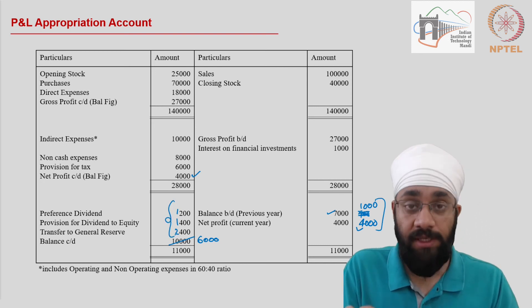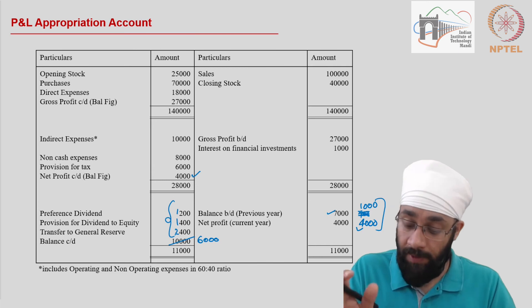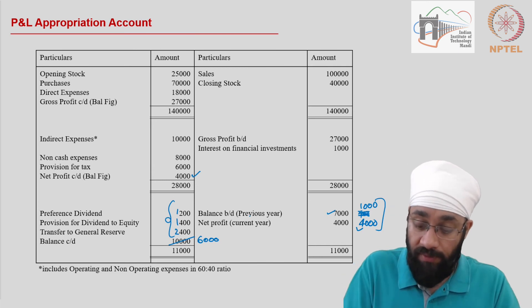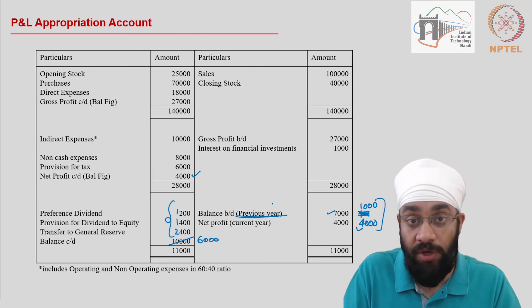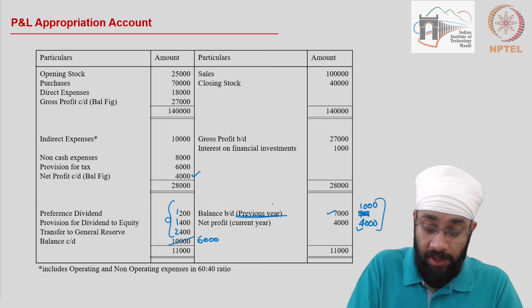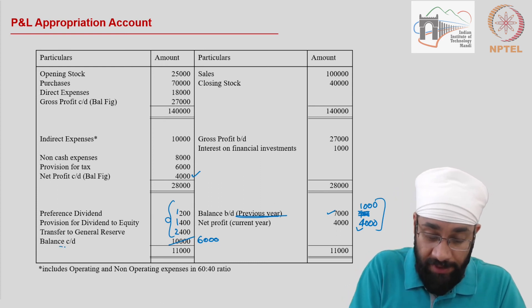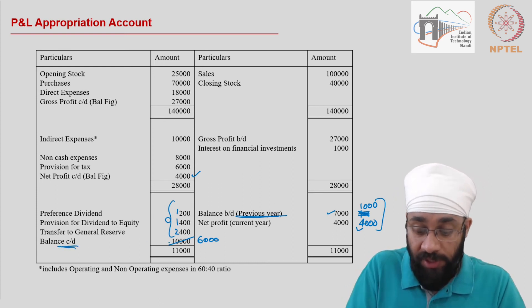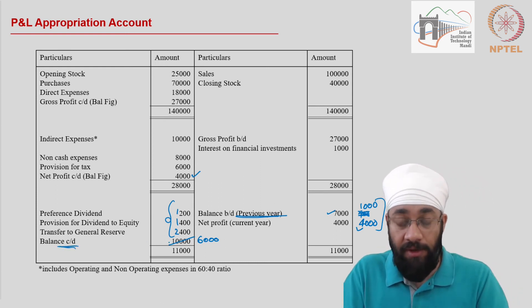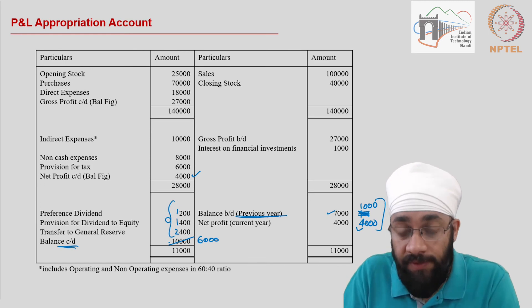All these scenarios can take place, but what is important to understand is the previous year's balance — what it is and where it is coming from — as well as what the closing balance in retained earnings represents.